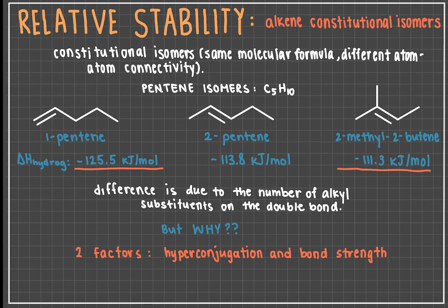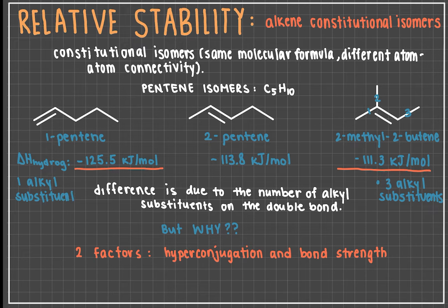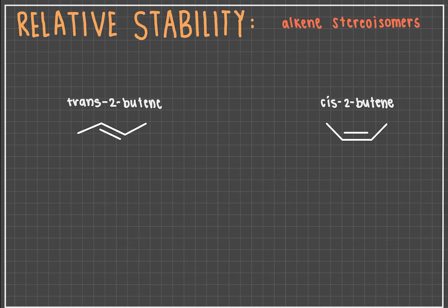Revisiting the constitutional isomers of pentene we saw before, now you can understand why 2-methyl-2-butene is more stable than 1-pentene. There are three alkyl substituents adjacent to the double bond of 2-methyl-2-butene and only one in 1-pentene. Aside from alkene constitutional isomers, stereoisomers also have differing relative stabilities.